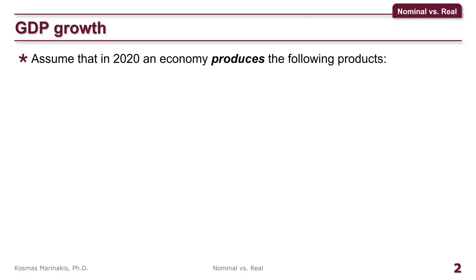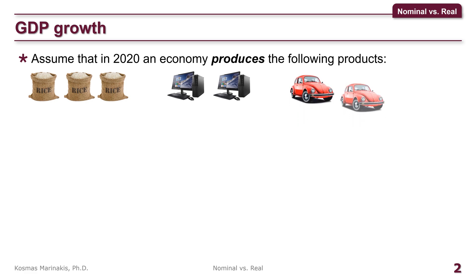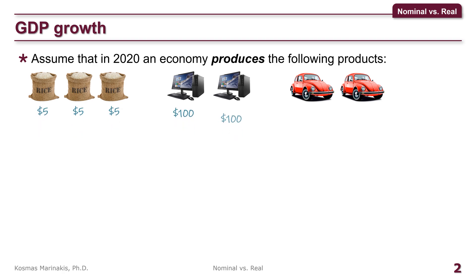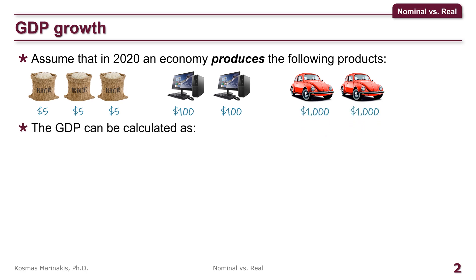Assume that in 2020, an economy produces the following goods: three sacks of rice, two computers, and two cars. Also assume that each sack of rice costs $5, each computer $100, and each car $1,000. The GDP of this economy can be easily calculated if we multiply the three sacks by $5, add the two computers by $100, and add the two cars by $1,000 to receive $2,200.